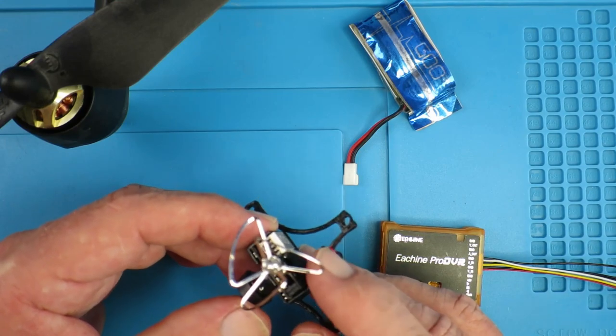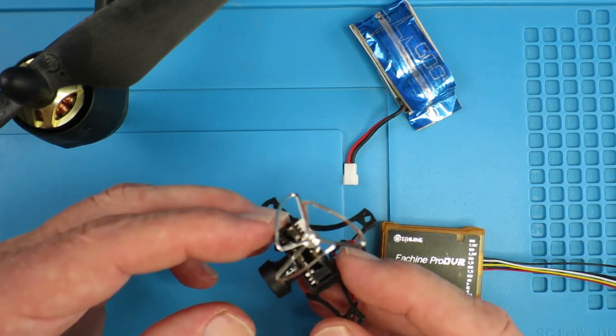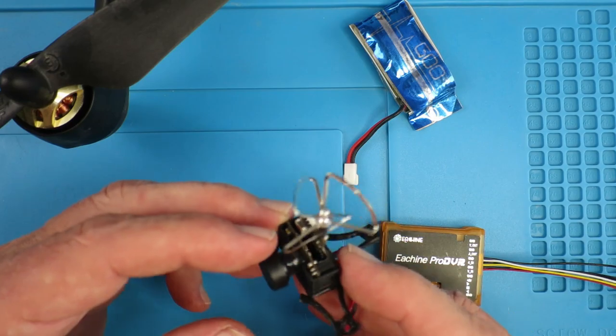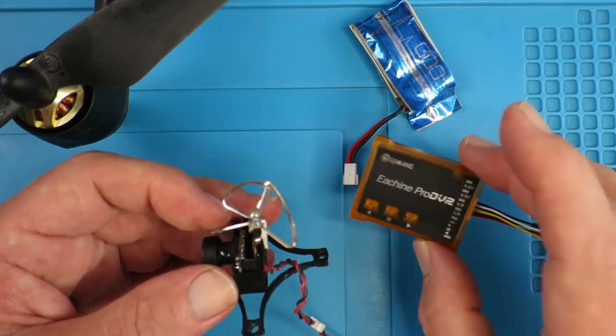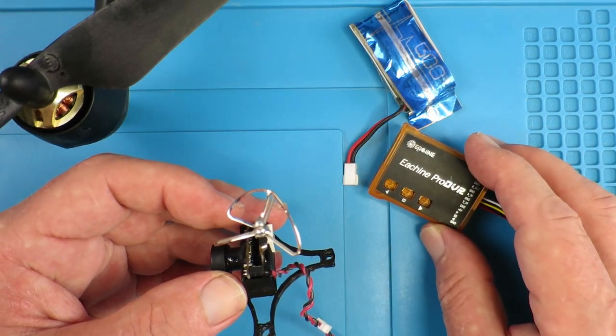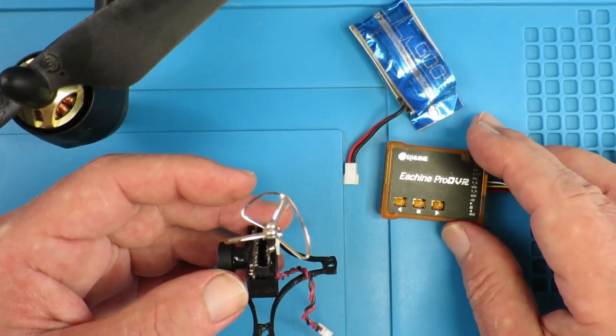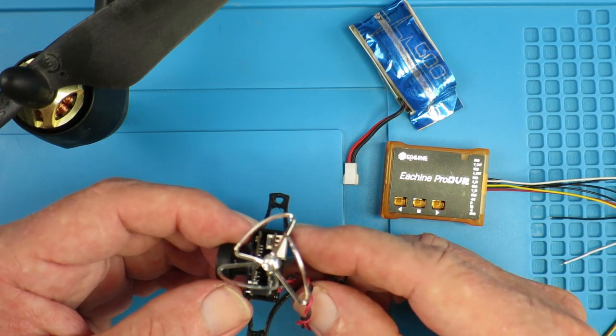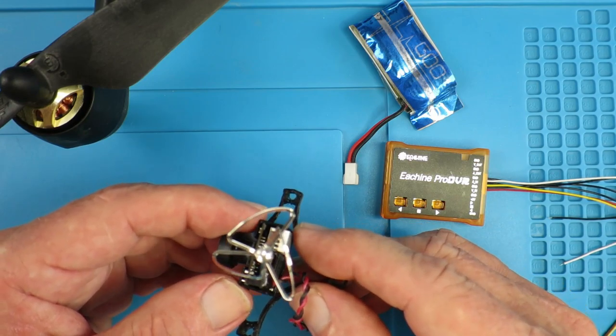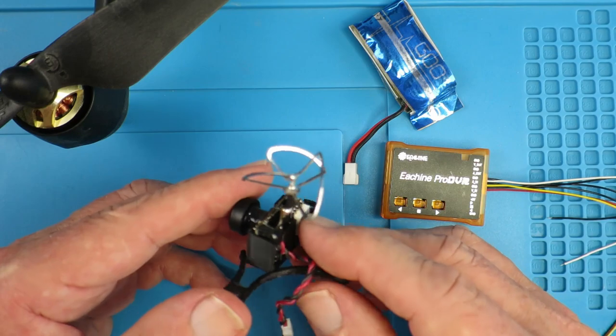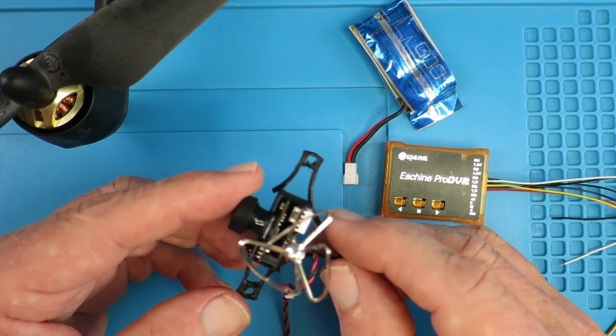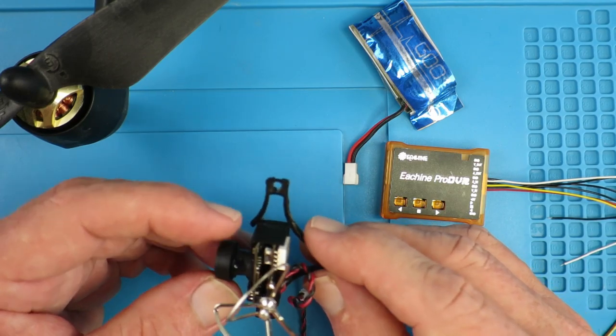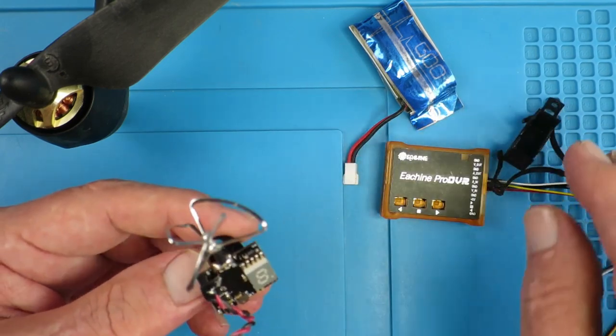So I got to thinking whether there was some way we could break out the composite video from this little guy and have the DVR recorder strapped to the Hubsan and see if it improved things, see what difference there was between the output of the camera directly and after it's been transmitted. So let's see if we can discover where the composite video out is on this little guy.